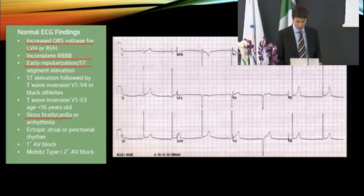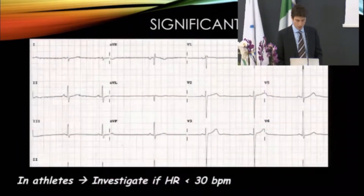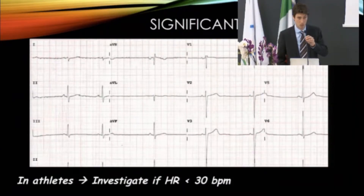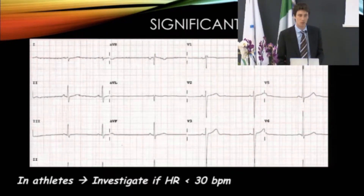Sinus bradycardia is defined by heart rate less than 60 beats per minute. We can have very profound bradycardia in athletes. Bradycardia is a completely normal finding in athletes, and if there is no bradycardia, we should think something is abnormal — maybe the individual in front of us is not an athlete. Bradycardia is absolutely found in every athlete.